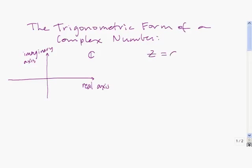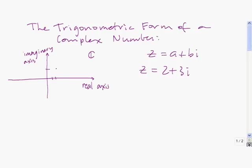Every complex number of the form A plus Bi can be plotted in the complex plane, where along the real axis we go A units, and along the imaginary axis we go B units. For example, the complex number Z equals 2 plus 3i can be plotted by going 2 units in the real direction and then up 3 units in the imaginary direction.